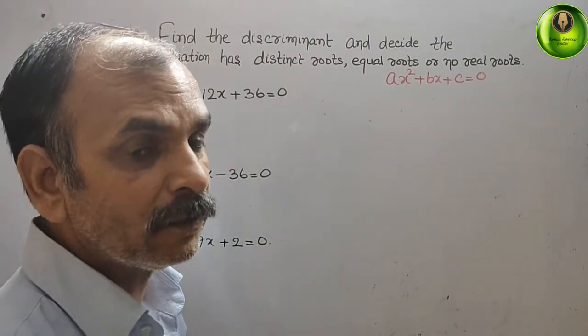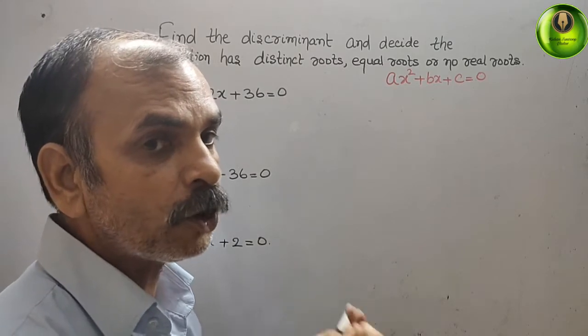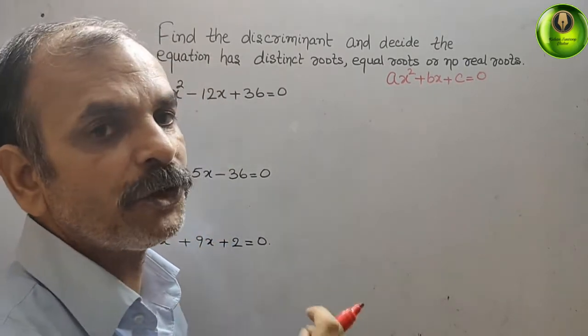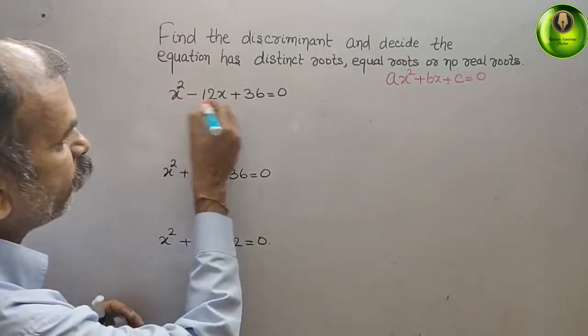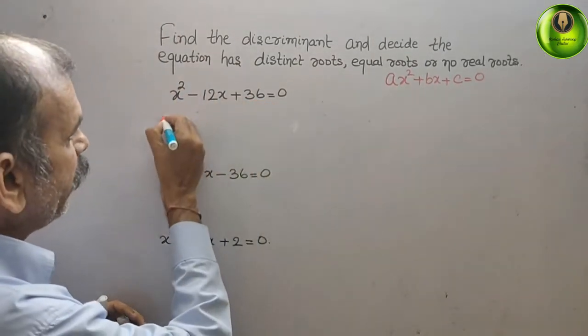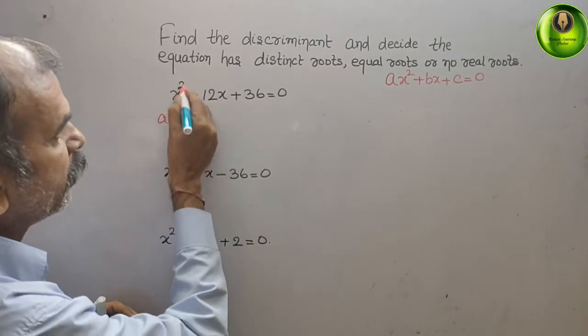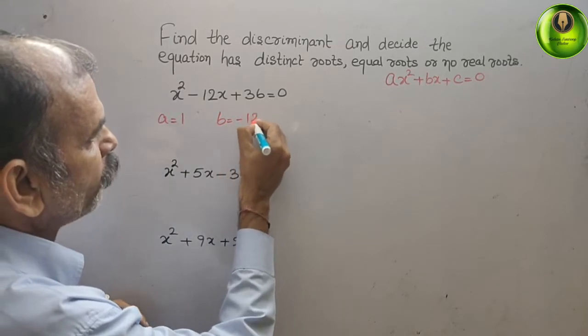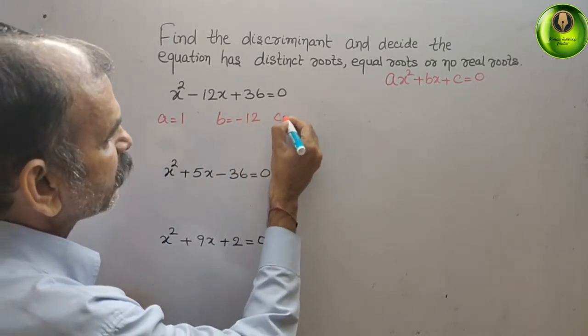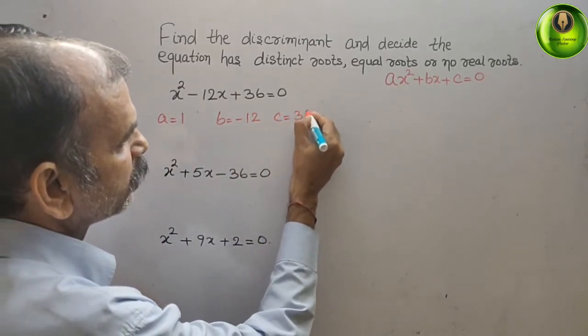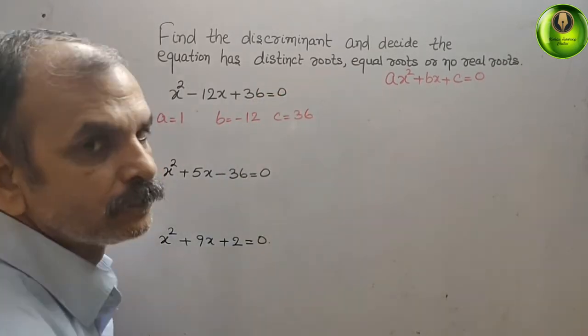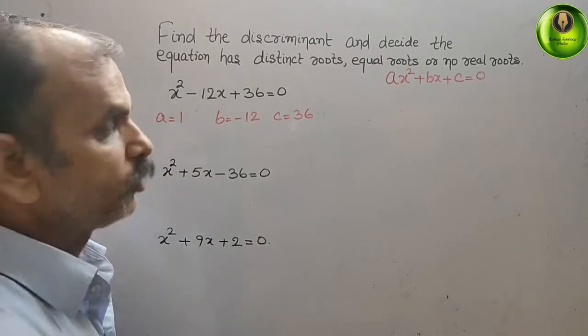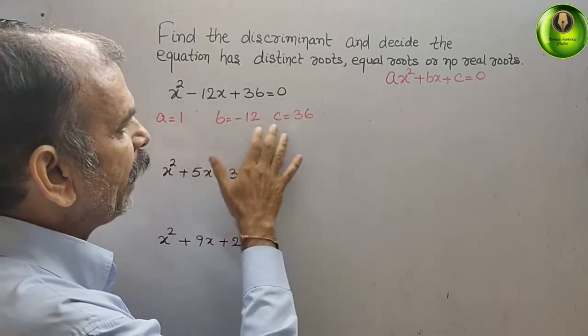Now, we have to write what is your a, what is your b and what is your c. That means your coefficients. So, here you can see what a is 1 and b is minus 12 and c is 36. That is your x square minus 12x plus 36. So, we will get a, b and c.